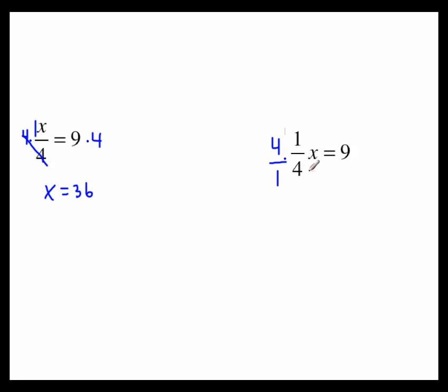Remember, reciprocal means just flip the fraction upside down. The reciprocal of 1 over 4 is 4 over 1. The reason this is beneficial is the 4s cancel just like they did over there, and we get x. We're going to multiply by 4 over 1 on this side. 4 times 9 is still 36.